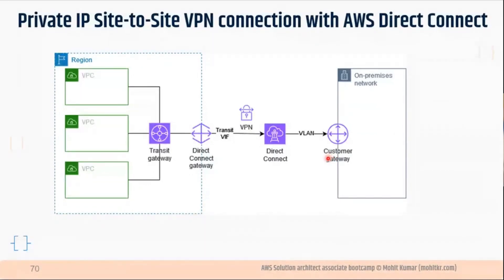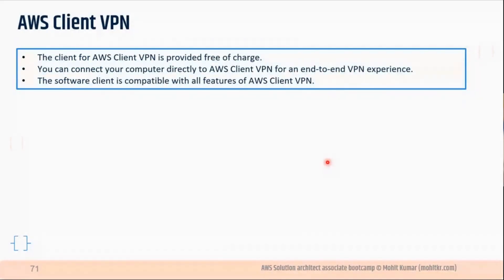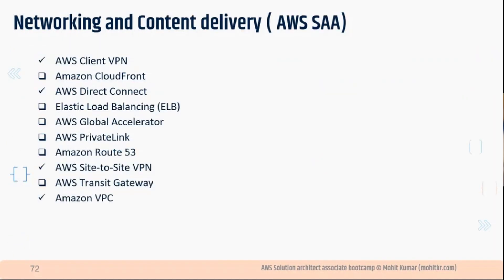AWS Client VPN is basically a software you can download to connect. That concludes this section covering Site-to-Site VPN, Direct Connect, and AWS Client VPN. Any questions on this section?